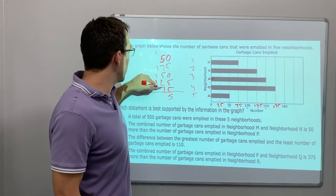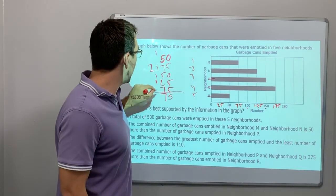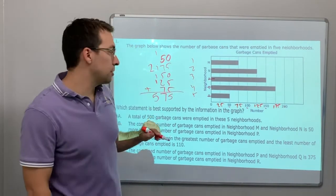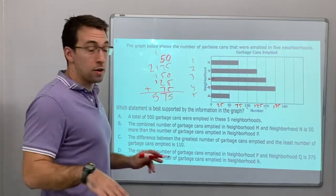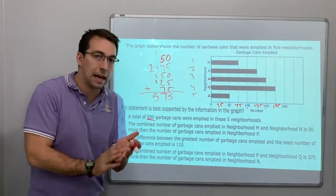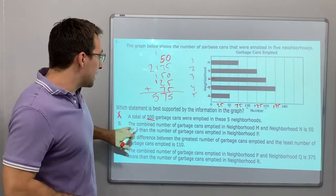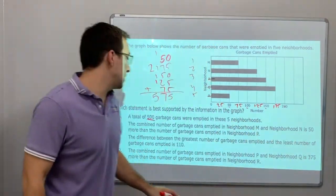2, 3, 4, 5. 575. A total of 500 garbage cans were emptied in five neighborhoods. No, it says 500, not 575, so it's not. It's got to be accurate. The combined number of garbage cans emptied in neighborhood M and neighborhood N is 50 more than, okay, this is a multiple steps.